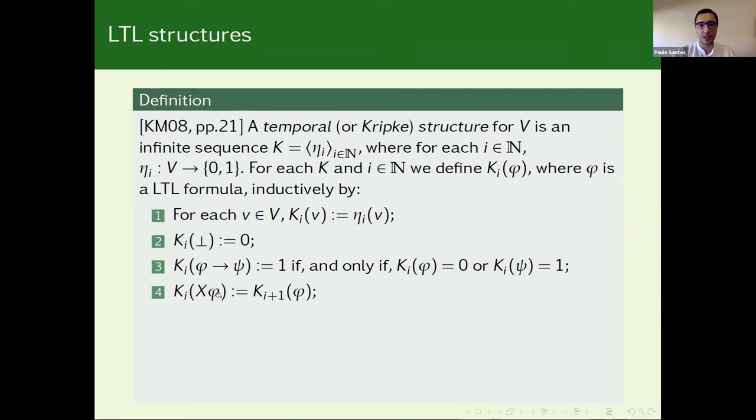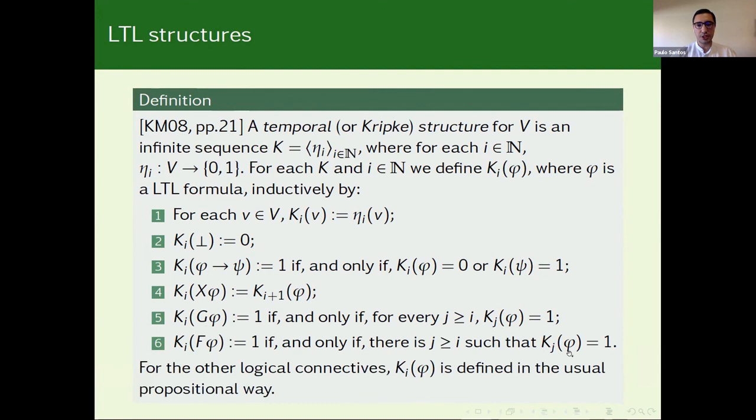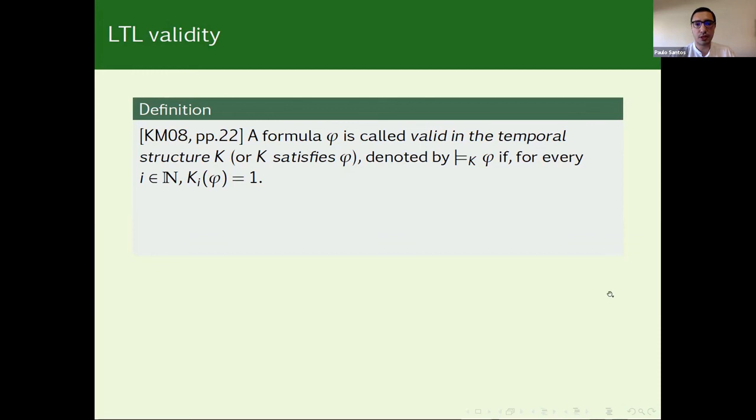Okay. And now the interesting part. K_I of the next moment phi, or equivalently K_I of X(phi) is simply K_{I+1} of phi. And here we have the fact directly expressing the fact that X talks about the next moment. Here we have the next moment. Okay. K_I of G(phi) is one exactly when it holds for all J greater than I that K_J(phi) is one. And here we have expressed the meaning of G. And similarly for F, K_I of F(phi) is one exactly when there is a J greater than I such that K_J(phi) is one. And for the other logical connectives K_I(phi) is defined in the usual propositional way.